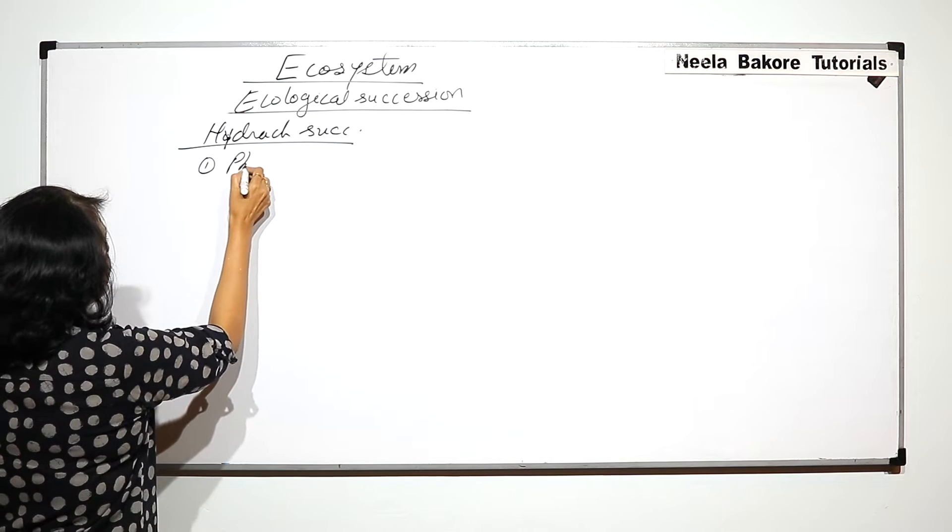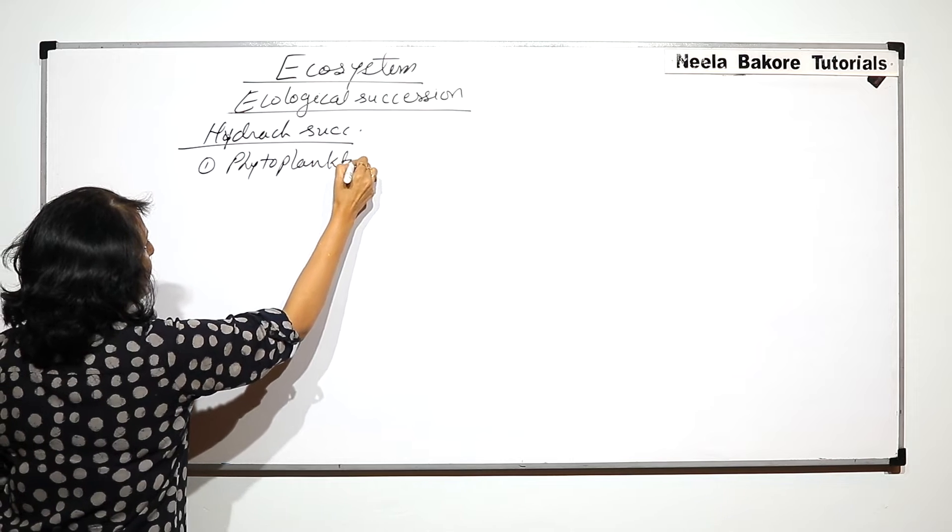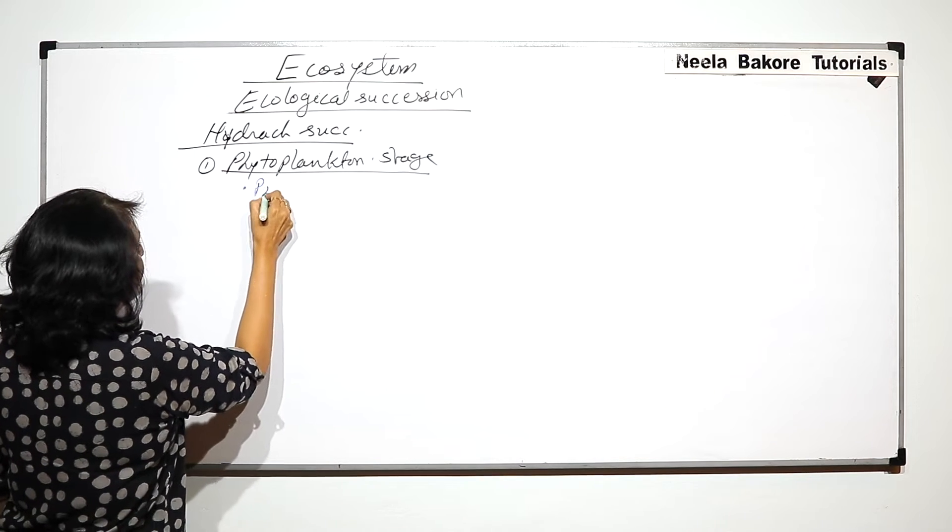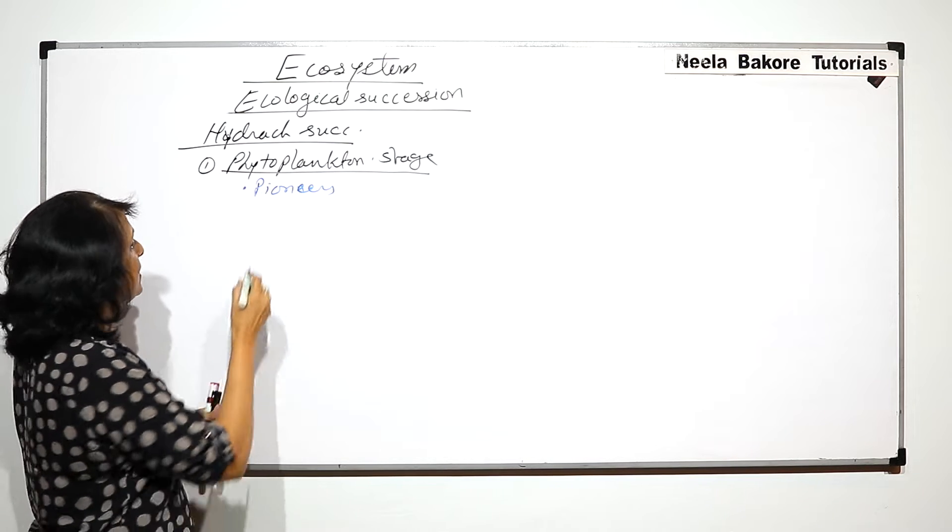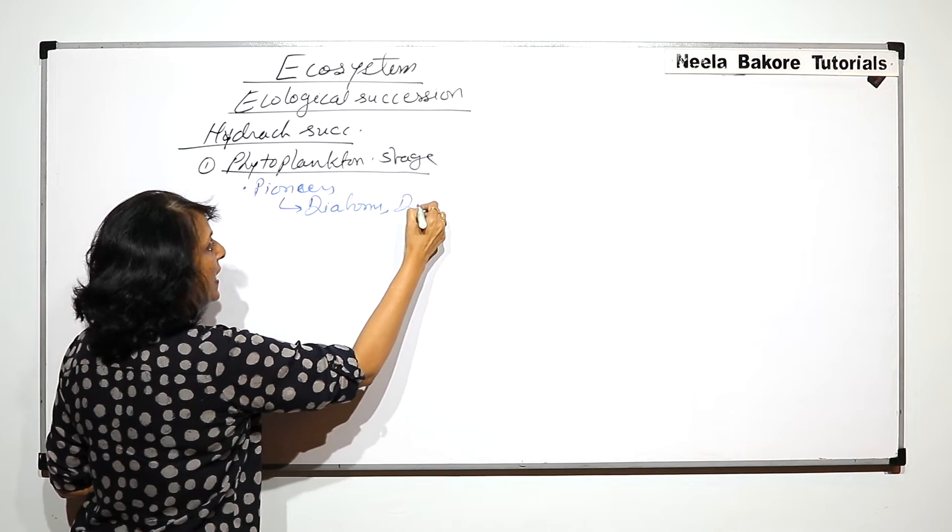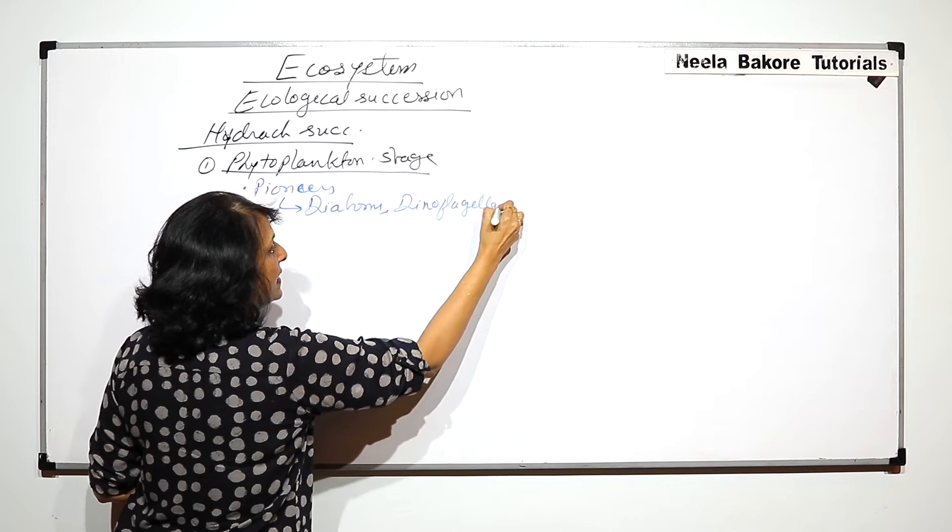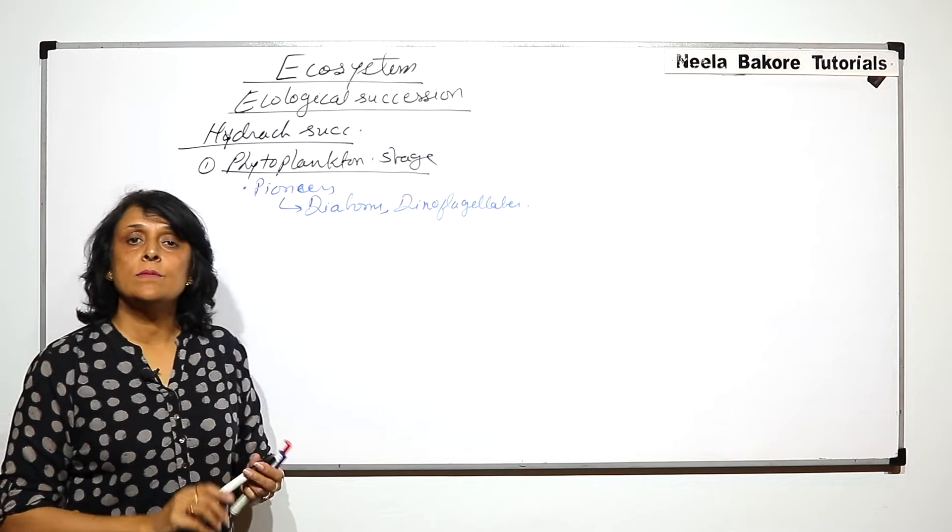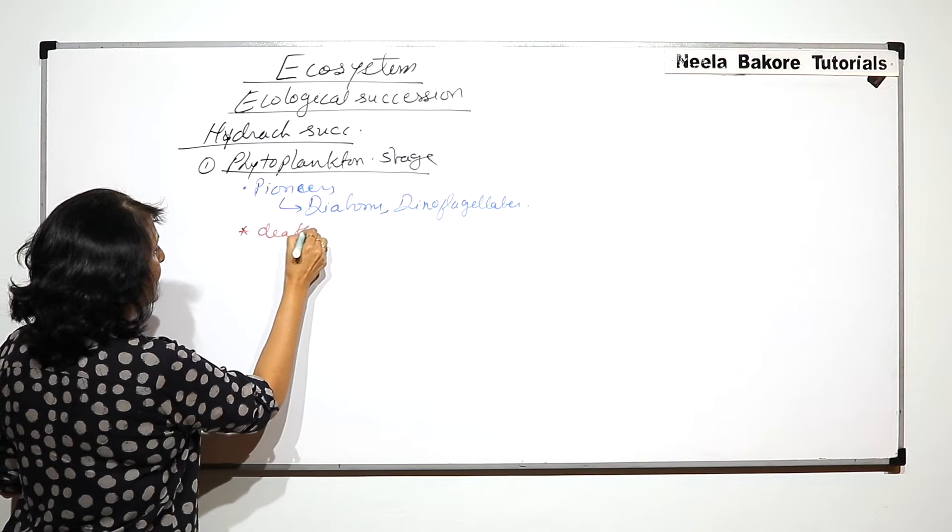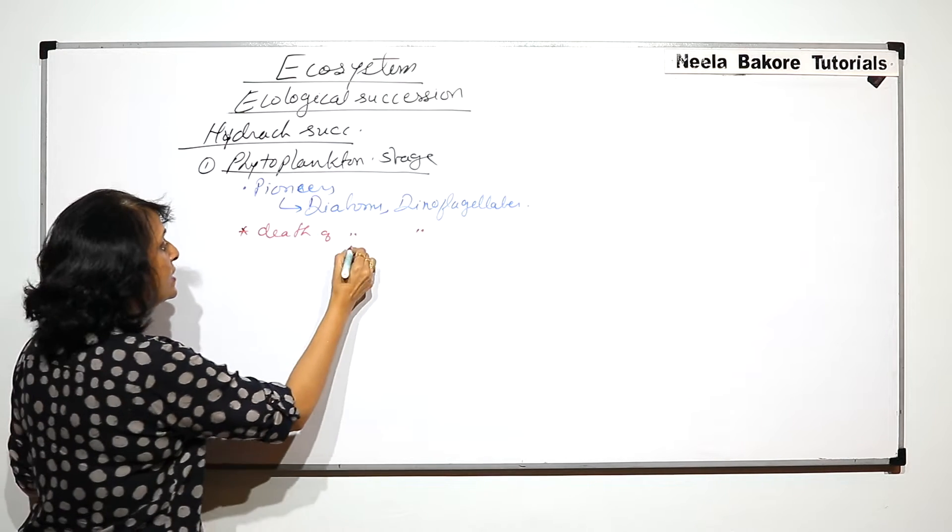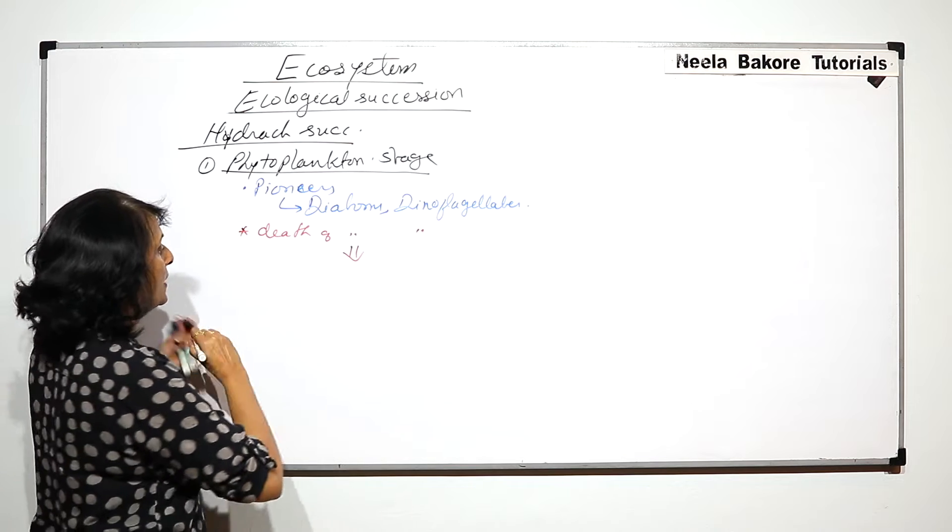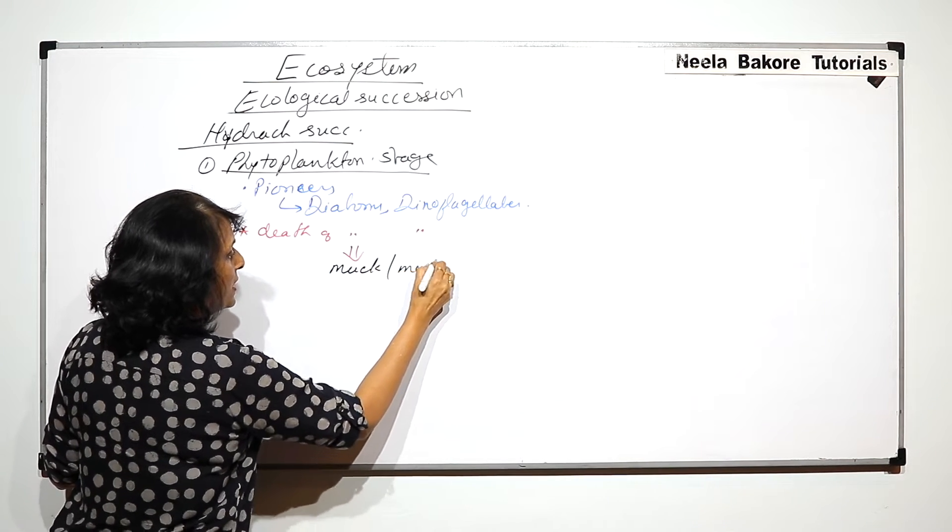There are seven steps of this hydrate succession. The first is known as phytoplankton stage. This stage is the pioneering stage. They are the pioneers and in this pioneer species we find diatoms, dinoflagellates, the unicellular organisms which help in photosynthesis. Death of these organisms would result in formation of a thin layer of mud or muck at the bottom of this water body.